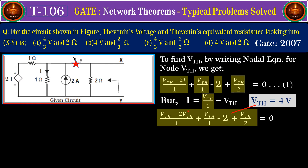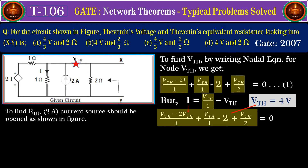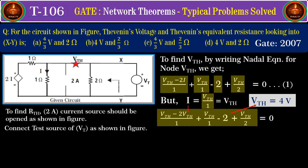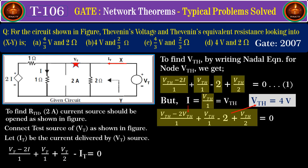Force the independent current source of 2 amperes to zero by opening it, then introduce a test voltage source of VT volts across terminals X and Y. The junction node voltage becomes VT. Let IT be the current delivered by the test source; the ratio VT divided by IT gives the Thevenin's resistance. Writing the nodal equation for node VT: (VT minus 2i) divided by 1 plus VT divided by 1 plus VT divided by 2 minus IT equals zero.